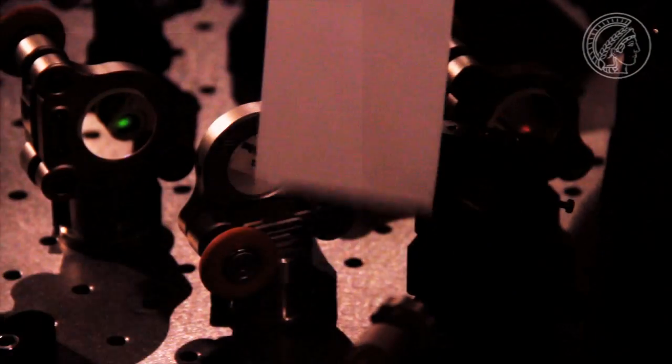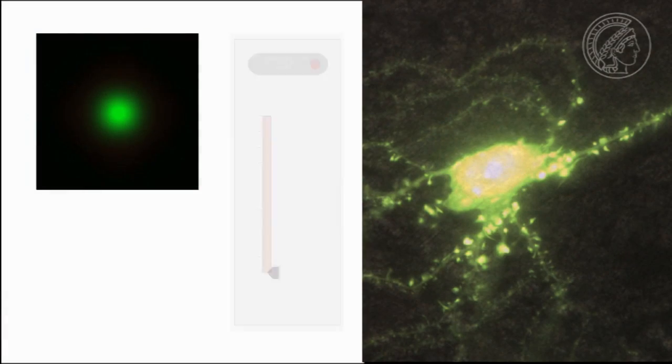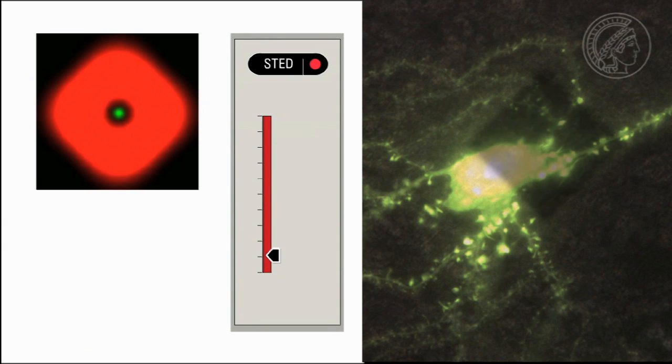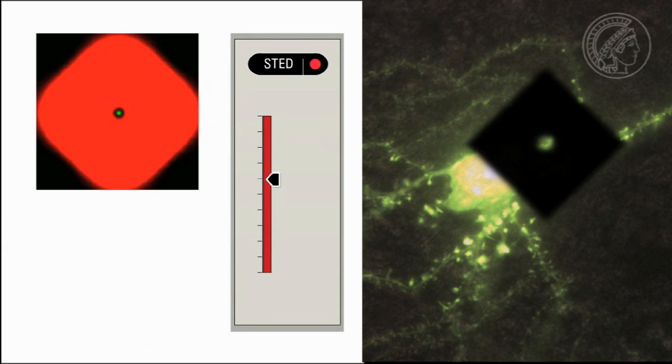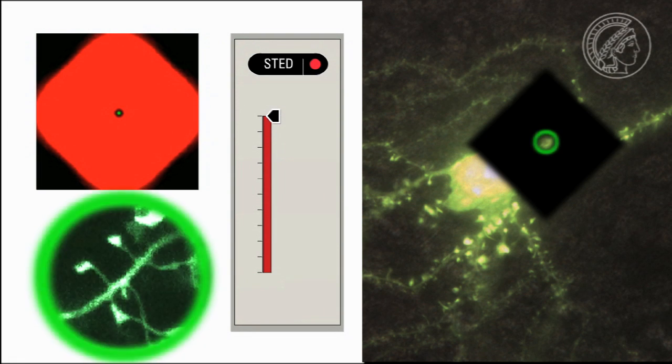The knack of the STED, a second laser, in this case red, works like an off switch. In a tiny aperture of the red laser, fluorescent green details remain, images beyond the resolution of a regular optical microscope.